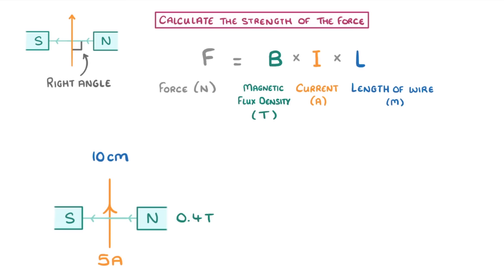Well first, we need to make sure that all of our figures are in the right units, which they are, except the length, which we have to divide by 100 to get 0.1 meters. Then all we need to do is plug all of our values into the equation, so 0.4 times 5 times 0.1, which gives us 0.2 newtons.